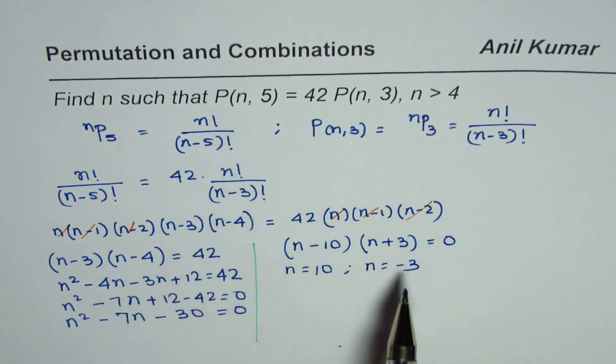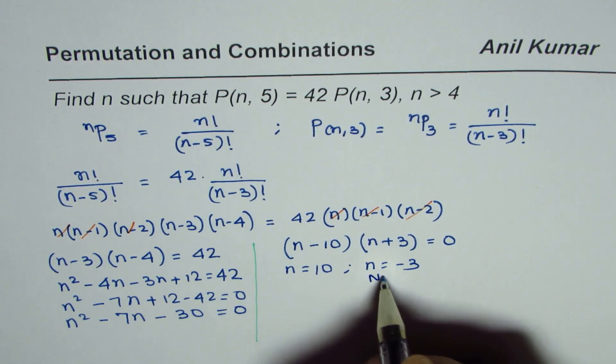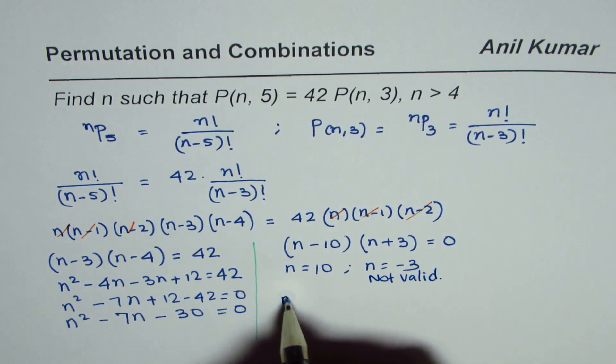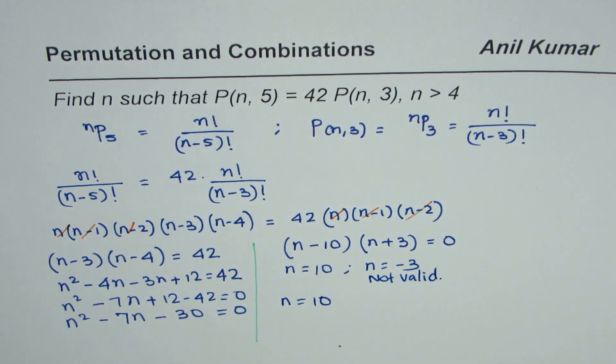Now we cannot have negative values, so that is not valid. And therefore, the solution is n equals 10. So n equals 10 is the solution of this equation. So that is how you can solve.